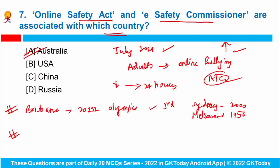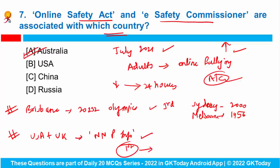Australia has signed an agreement with the USA and UK to allow the exchange of sensitive naval nuclear propulsion information between their nations. This three-way deal gives Australia US nuclear-powered submarine technology. It is the first agreement on the technology to be publicly signed since the three countries announced the formation of the defence alliance named AUKUS.